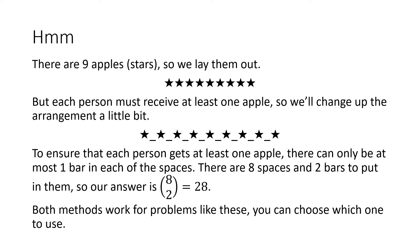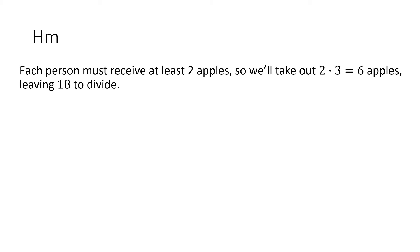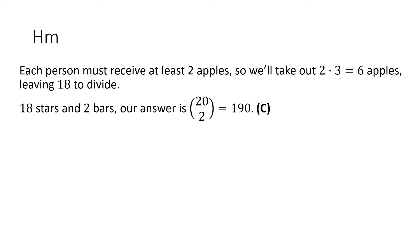Let's look at an example from the AMC 8 — this is the last problem from 2019. Alice has 24 apples. In how many ways can she share them with Becky and Chris so that each of the 3 people has at least 2 apples? The answer choices are A) 105, B) 114, C) 190, D) 210, E) 380. Each person must receive at least 2 apples, so we take out 2 times 3 equals 6 apples, leaving 18 to divide. There are 18 stars and 2 bars, so our answer is 20 choose 2, or 190. That is C, and we are done with this question.